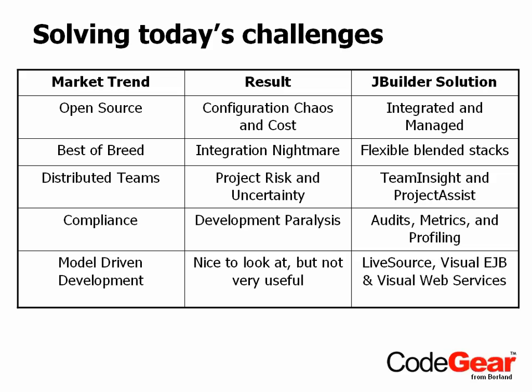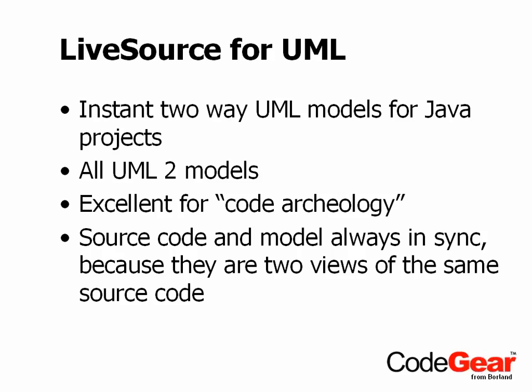What we've done is built on top of the live source capability to give you visual EJB and visual web services, as well as full UML modeling. Starting with live source for UML, you have instant two-way UML models for Java projects with all of the UML 2 diagrams. This is a great tool for code archaeology — if you're working on a very large, complex, or unfamiliar project and need to understand it and surgically correct a bug, this helps you identify the problem, understand the structure, make the change, understand its impact, and be confident in the changes you're making. Because this is based on live source, the source code and the model are always in sync — they're just two different views of the same source code, not generated from each other.